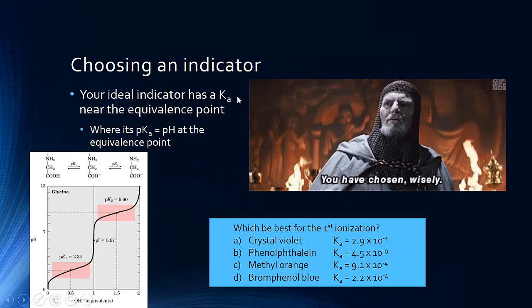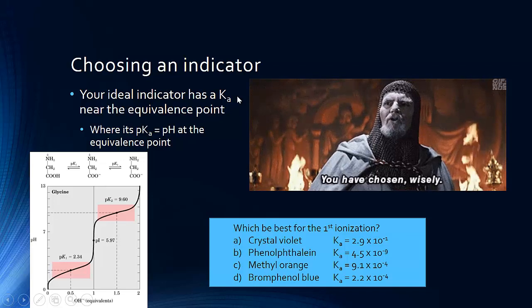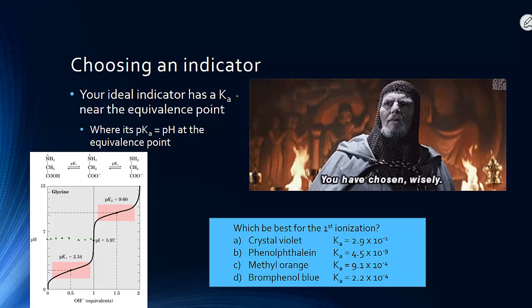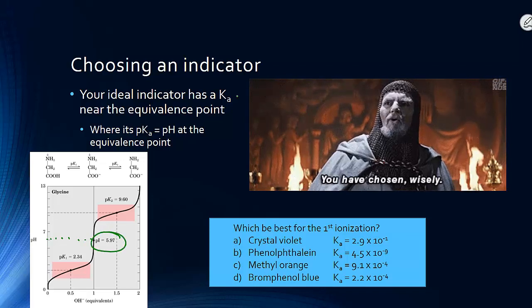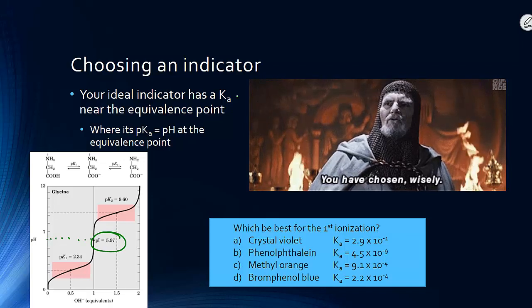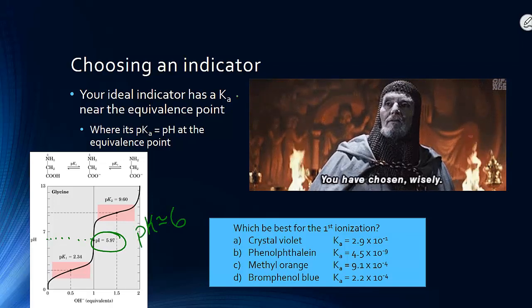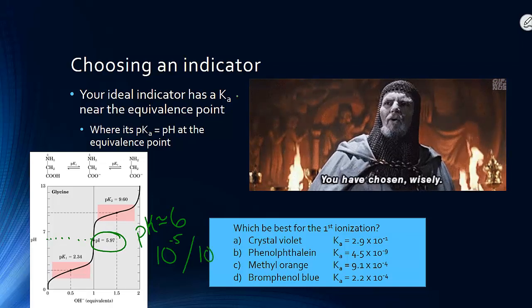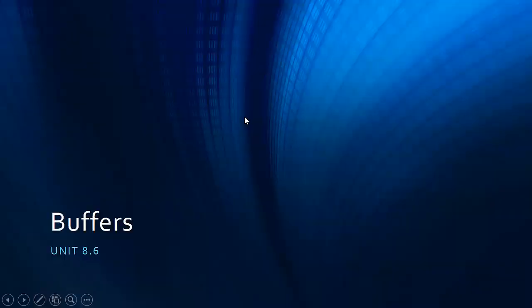To know which indicator to use, pick one whose pKa is close to the pH at the equivalency point. For example, if titrating glycerin whose equivalency point is at about pH 6, you would choose an indicator with a pKa close to 6 — something like 10⁻⁵ or 10⁻⁶. With that, we are done with titrations.